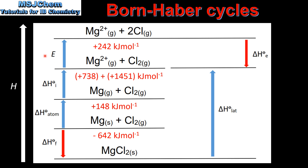Next is the bond dissociation enthalpy, which is the enthalpy change when one mole of bonds is broken in the gaseous state. In this step we have one mole of bonds in the gaseous state being broken to form two moles of gaseous chlorine atoms.